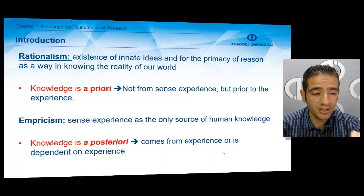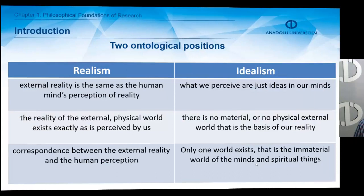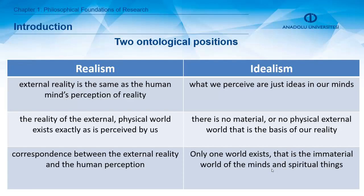When we look at ontological positions, there are two important concepts: realism and idealism. Realism holds that there is an important correspondence between external reality and human perception. Idealism, however, holds that there is no material or physical external world as the basis of reality — scholars in this tradition believe that we have ideas in our minds, and this is how we shape our knowledge of the world.